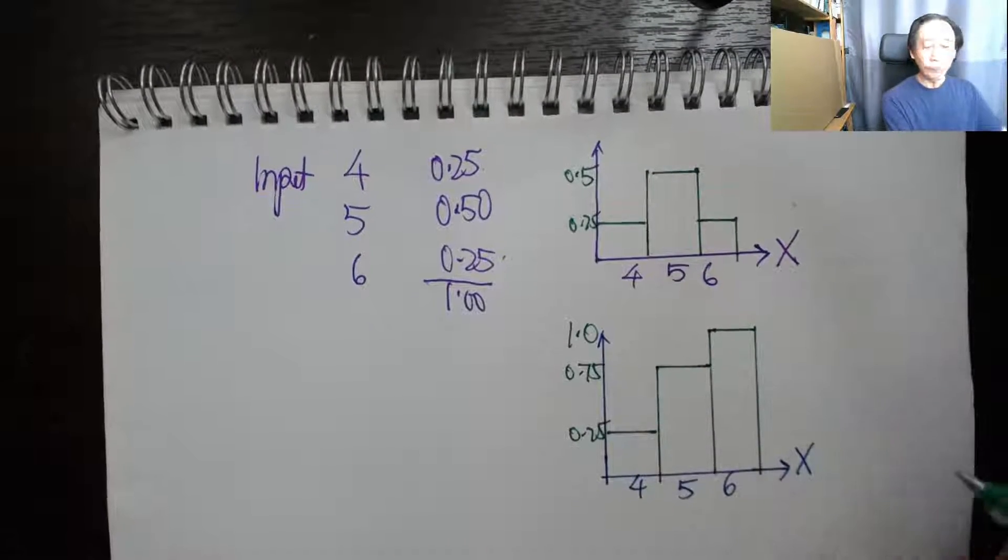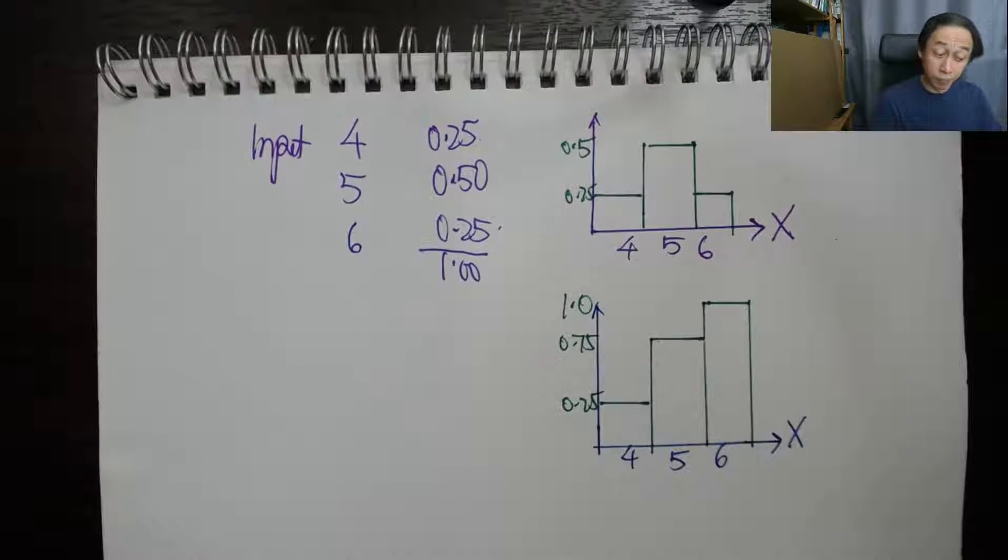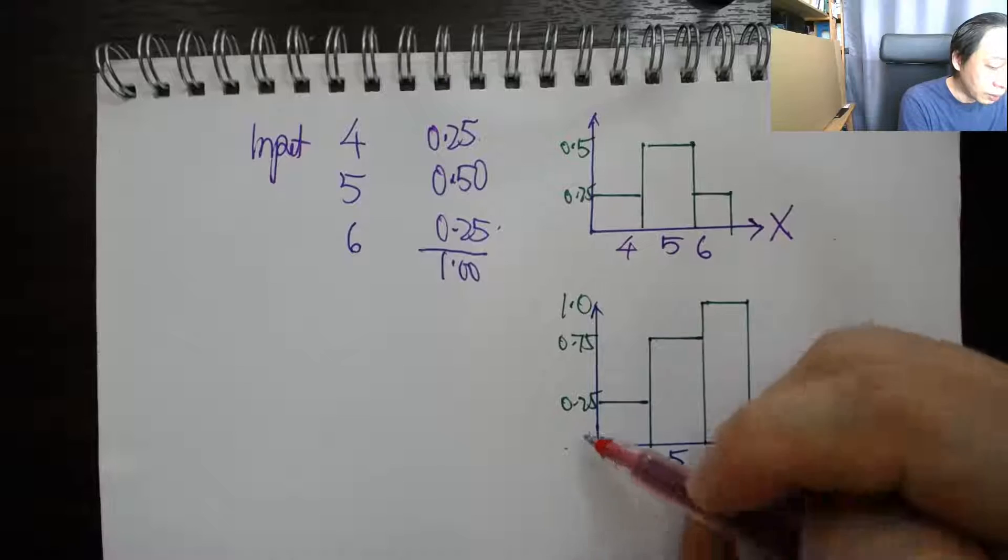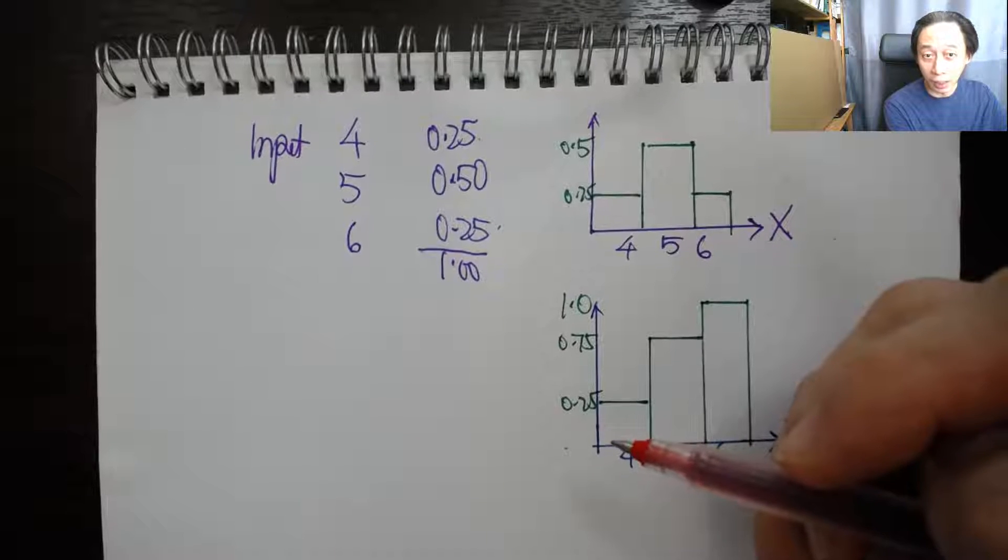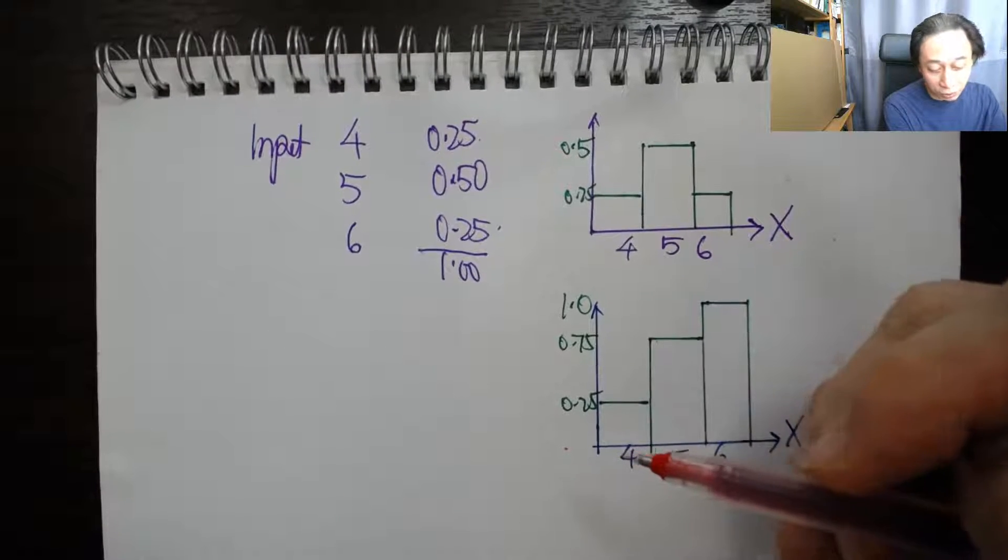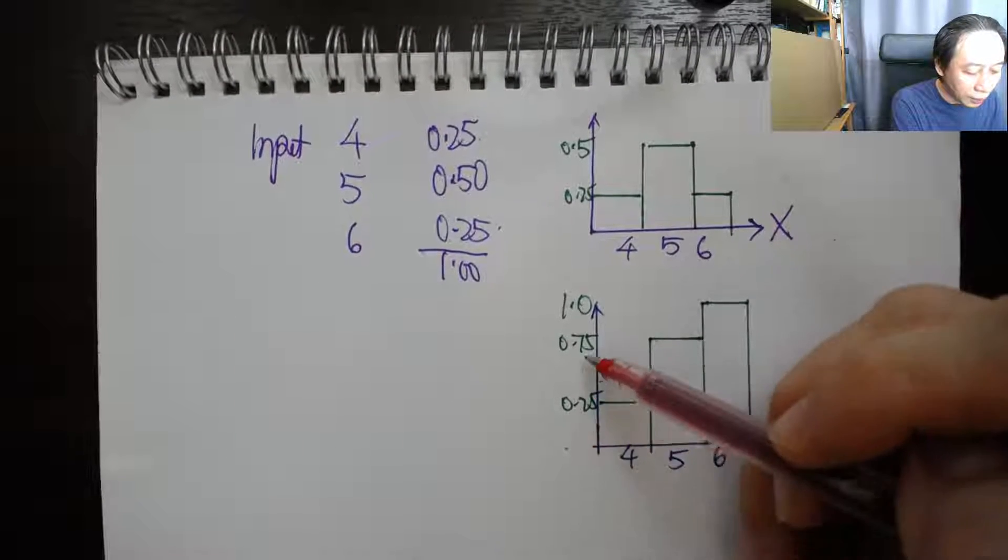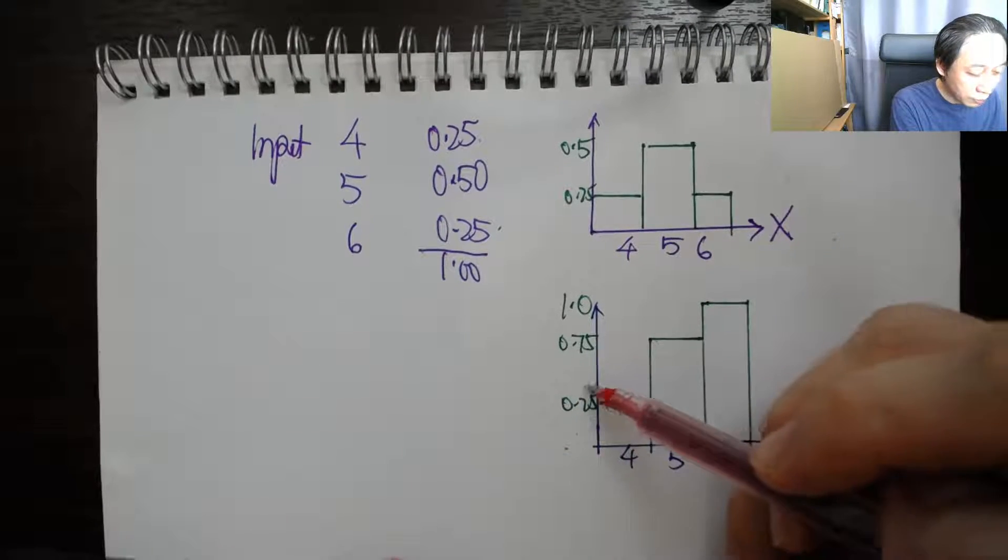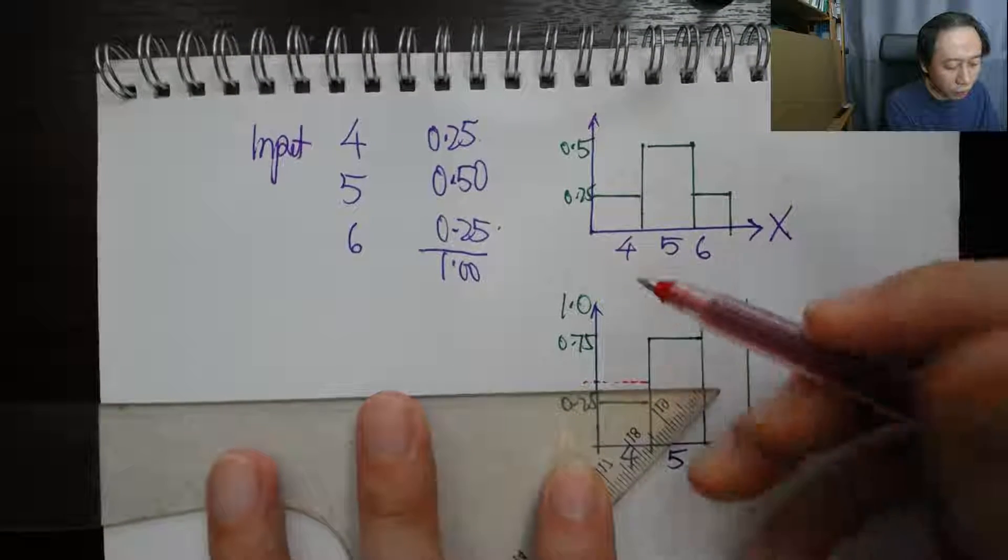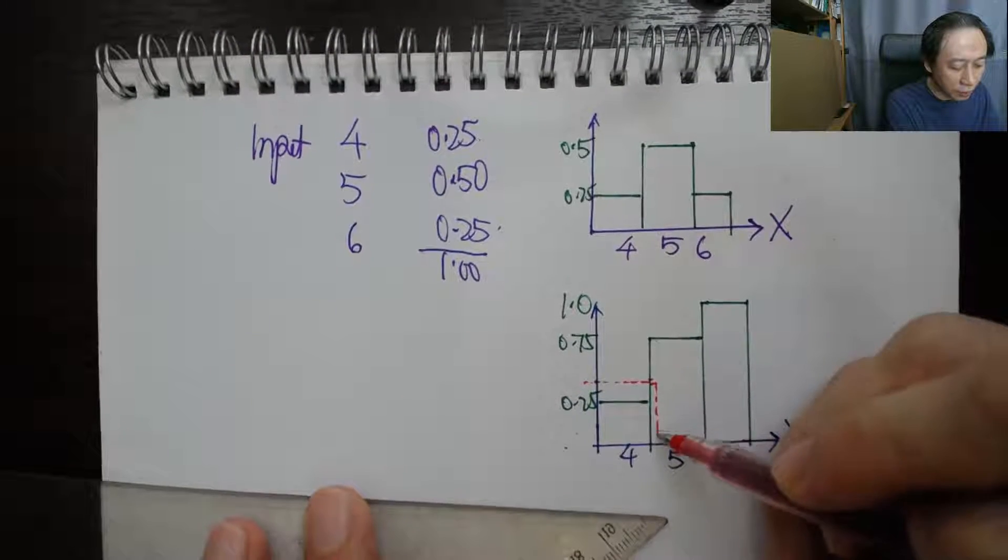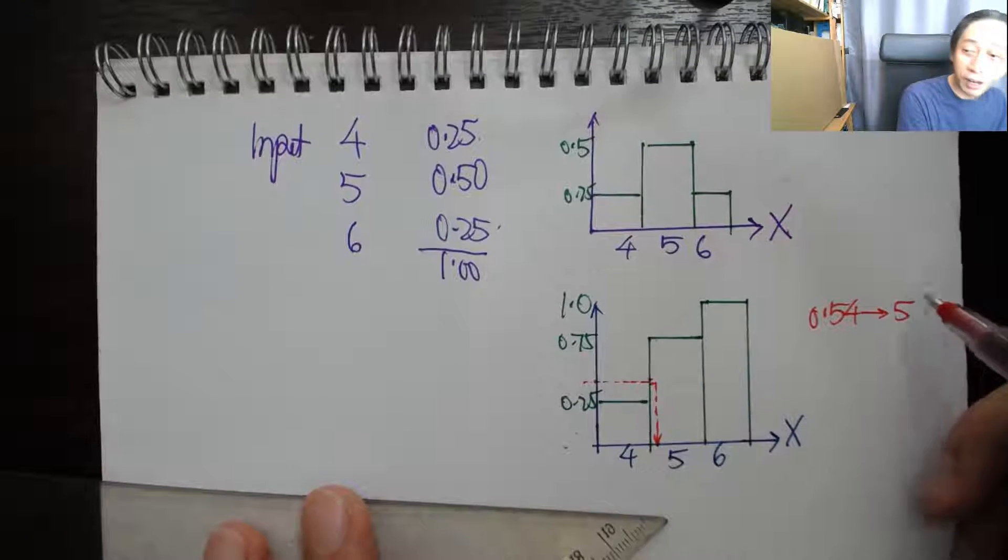The idea is that when we randomly generate a number using RAND between zero to one, we are basically randomly selecting a height. Just like the laser beam shooting from the y-axis to the CDF curve and then dropping down, we randomly pick a height. Let's say 0.54. It's going to be somewhere around here. We shoot a laser beam, it hits the wall of five and then drops down, and therefore we get a five. So 0.54 gives rise to a five being generated.